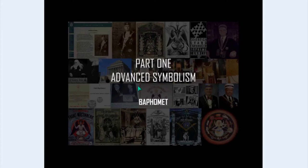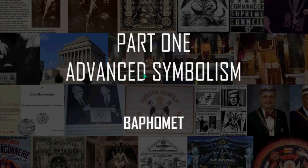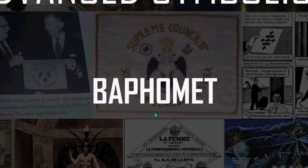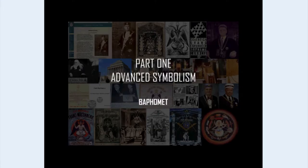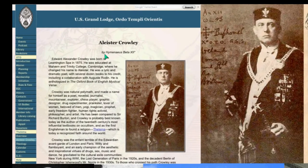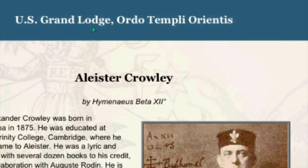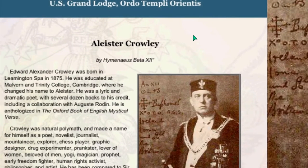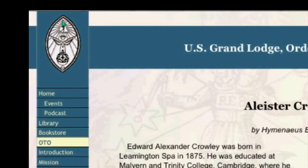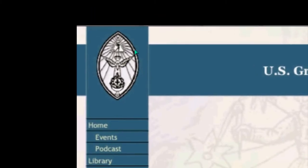We're still in part one and this is what I consider advanced symbolism and we're going to look at the concept of the Baphomet. We begin with none other than Aleister Crowley, the famous Satanist. This is an image of his website, the Grand Lodge, Ordo Templi Orientis. It has its roots in Freemasonry and secret societies and the mystery religions, which is essentially Luciferian doctrine.